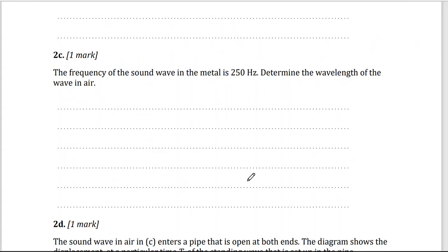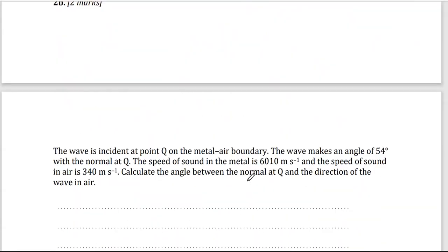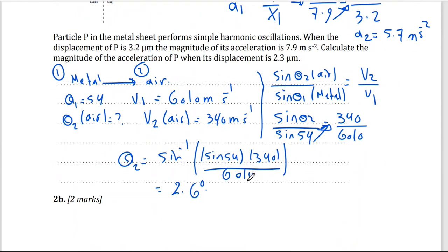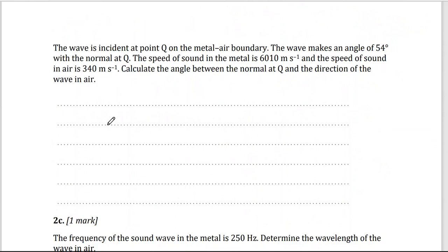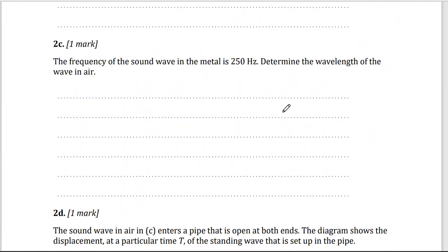The frequency of sound wave in the metal is 250 hertz. Calculate the angle between normal and we're done with the C now. The frequency of the sound wave in the metal is 250 hertz, determine the wavelength of the wave in air.